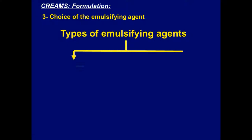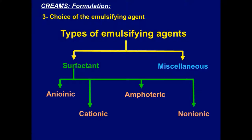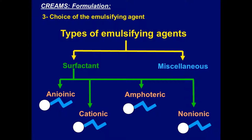There are two main types of emulsifying agents: surfactants — surface active agents that have a hydrophilic head and lipophilic tail — and miscellaneous. Miscellaneous emulsifying agents do not have this unique surfactant structure but they have emulsifying properties. Surfactants are further classified into anionic, cationic, amphoteric, and non-ionic surfactants.